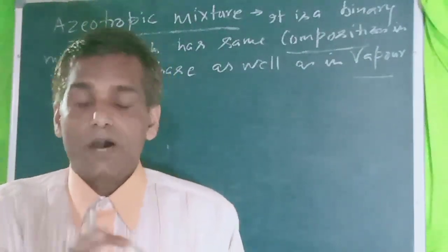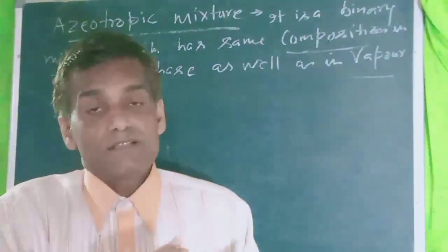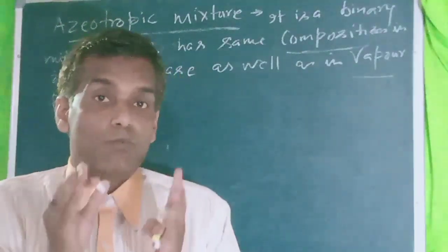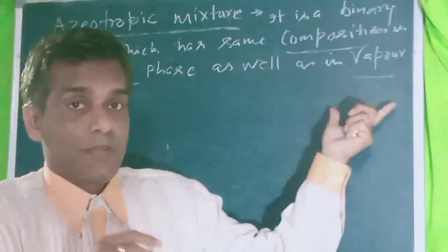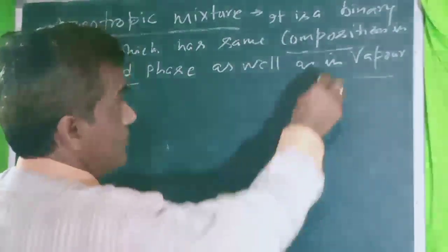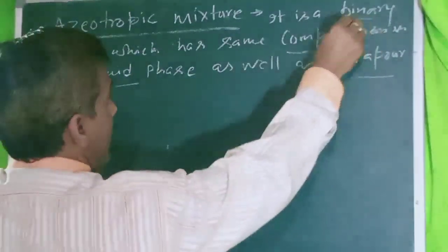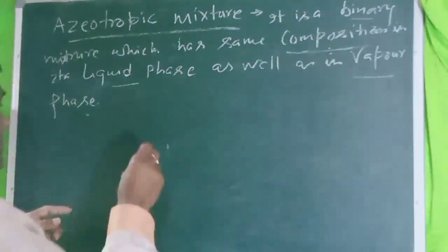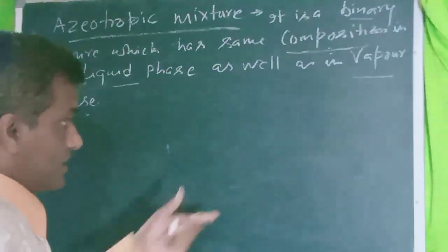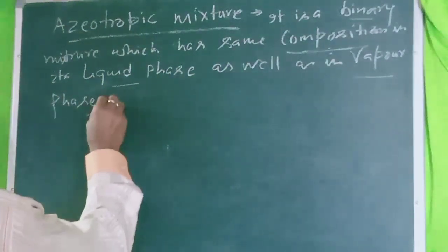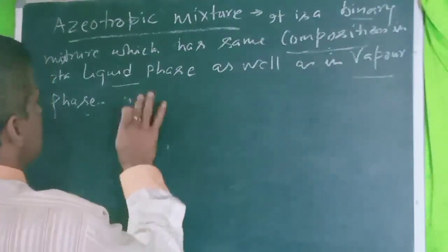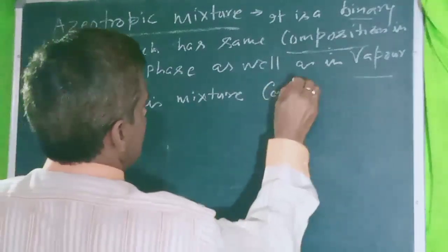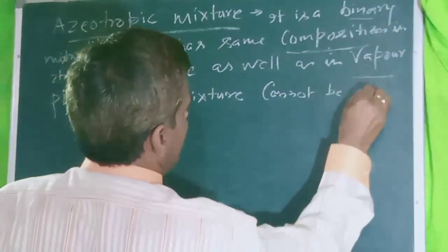Composition is very important here. A binary mixture means one solute and one solvent. In an azeotropic mixture, the mixture cannot be separated — it cannot be separated by fractional distillation.